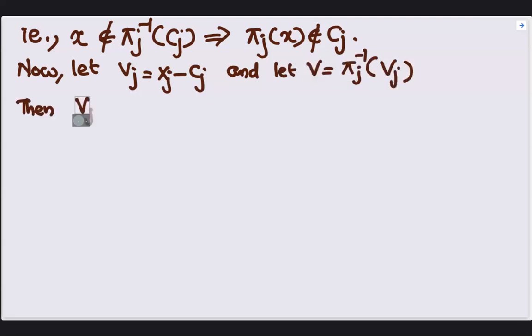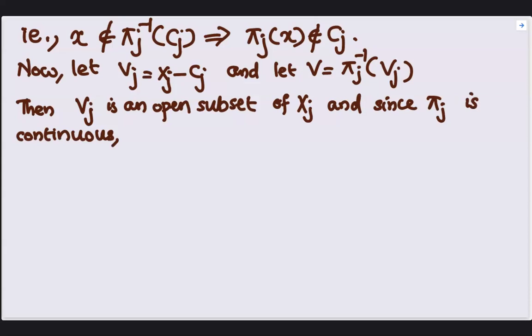Then V_J being the complement of a closed set is an open subset of X_J, and since pi_J, the J-th projection function is continuous, pi_J inverse of V_J, the inverse image of an open set, will be an open subset of X.